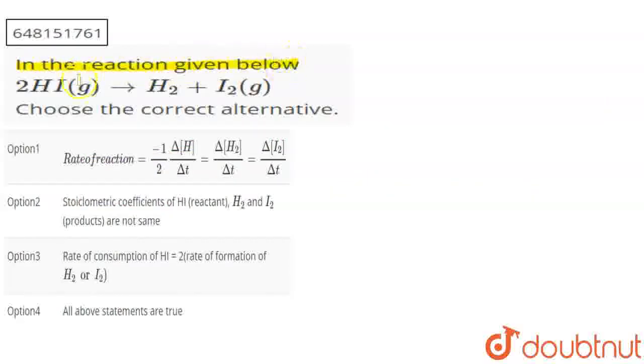The question given is: In the reaction given below, 2HI(g) → H₂ + I₂(g), choose the correct alternative. First, let's define the rate of the reaction. How will I define it?